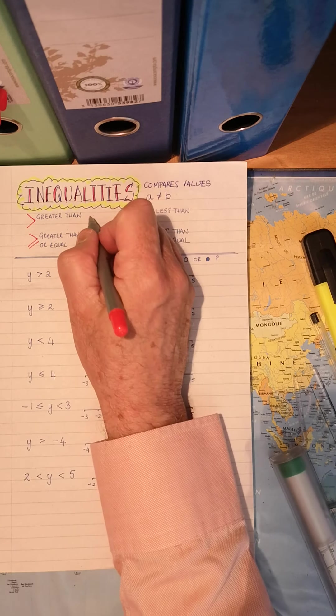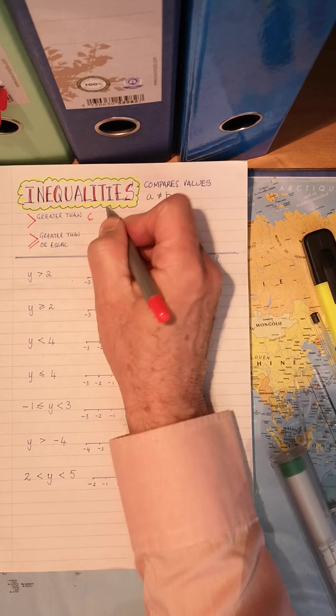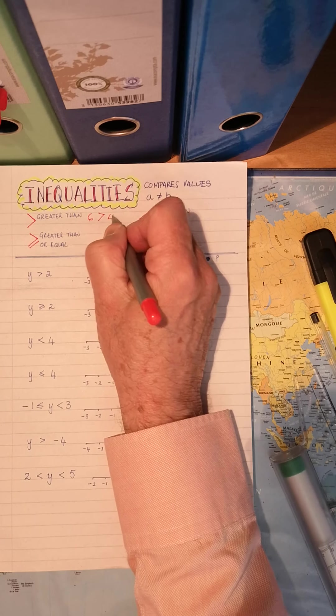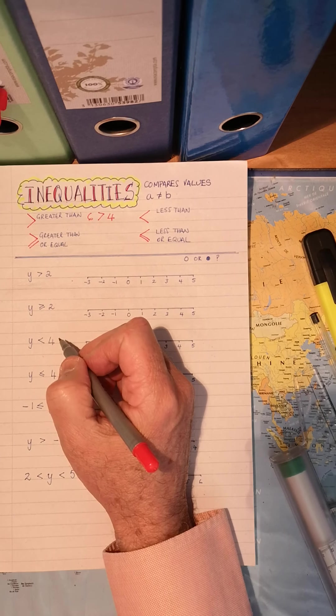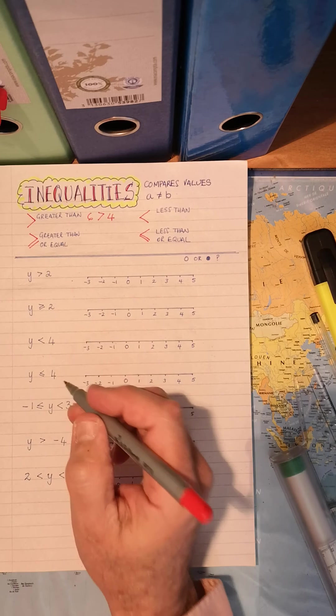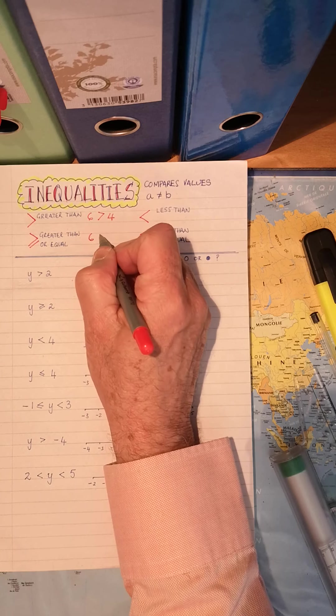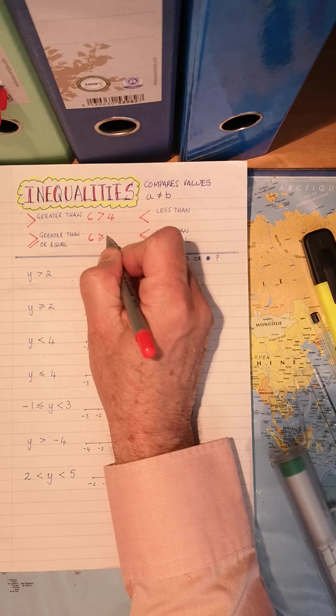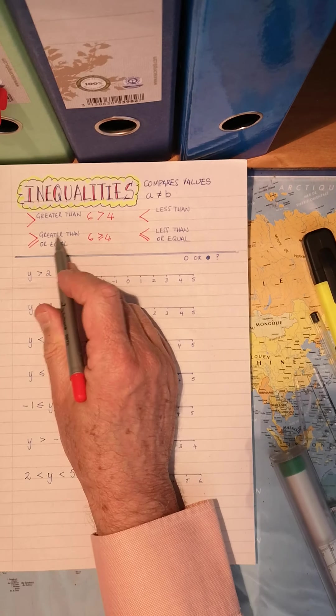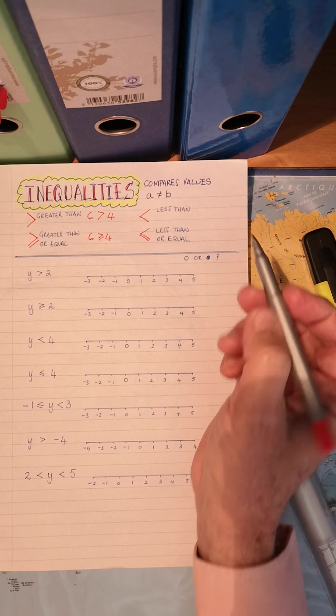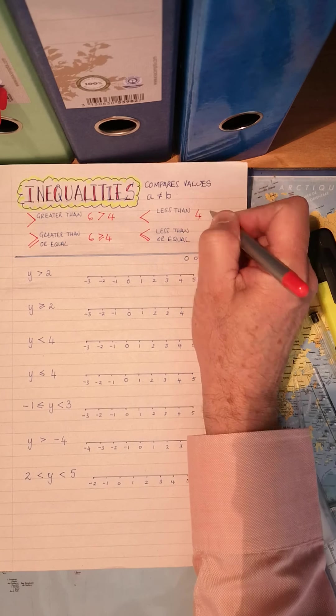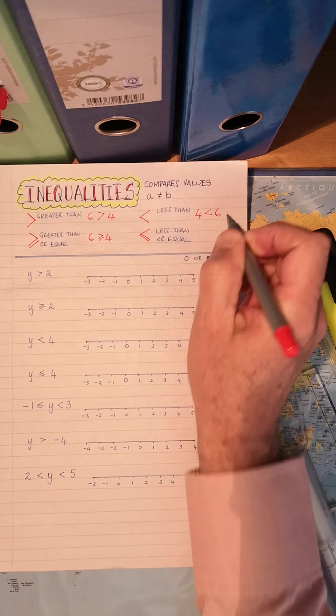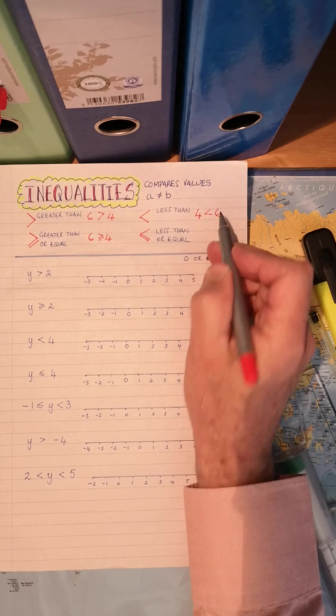So we could have said, let's take six bigger than four. See the bigger number? Crocodile's mouth eating the bigger number. This one could have been six is bigger than or equal to four. So greater than, bigger than, less than would be four is less than six. Bigger number over there. There we go. Crocodile again.